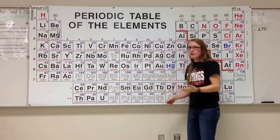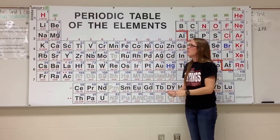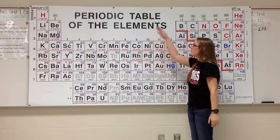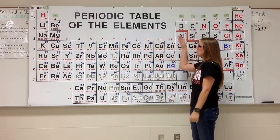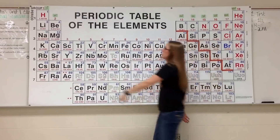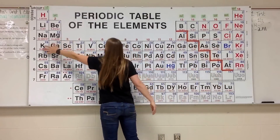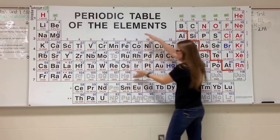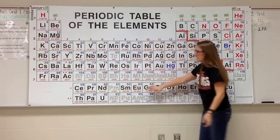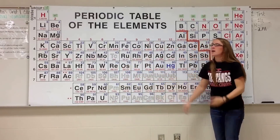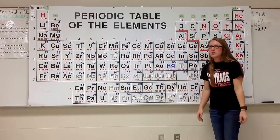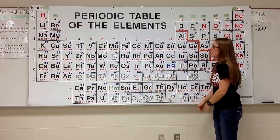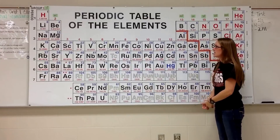So all you do is follow your pattern, moving across your periodic table with your S block, your P block, D block, and F block, always continuing up the numbers as you're adding electrons.